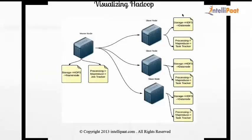Digging a bit deeper, Hadoop has one master node and multiple slave nodes — slave nodes can number in the thousands. On the master side, the component that takes care of storage is called the Name Node, and the one that takes care of processing is called the Job Tracker. On the slave node, the storage component is called the Data Node, and the processing component is called the Task Tracker.